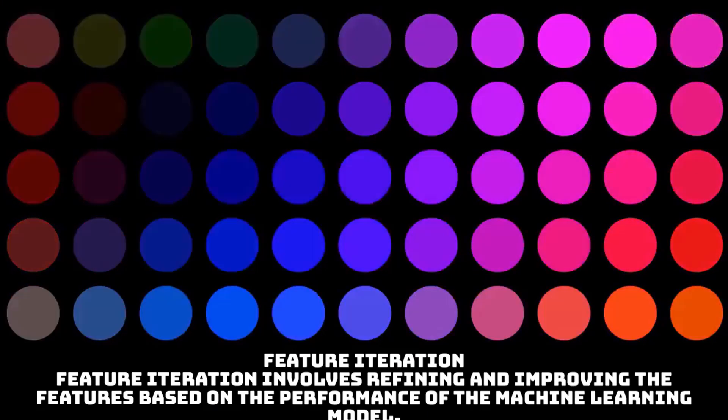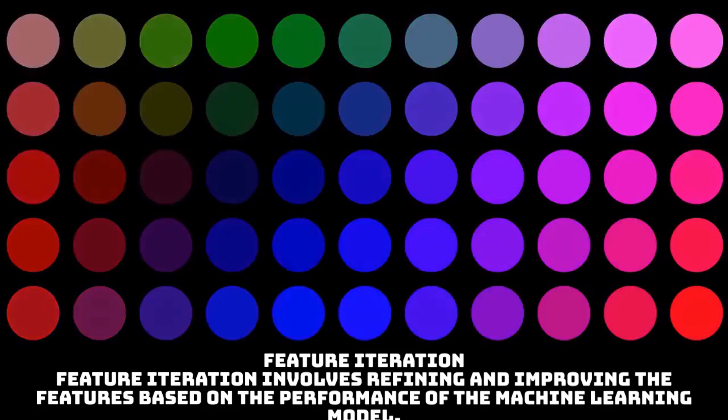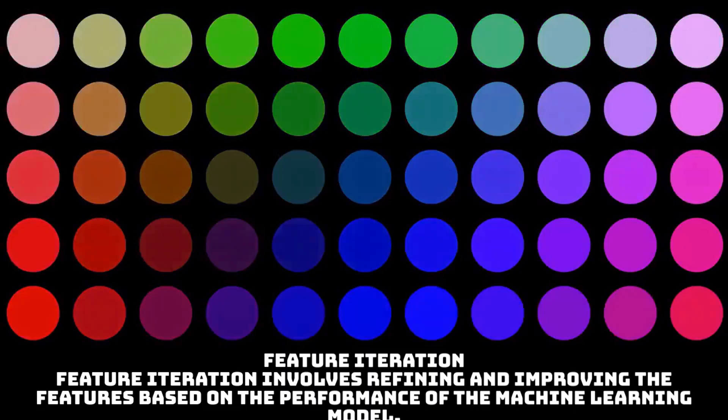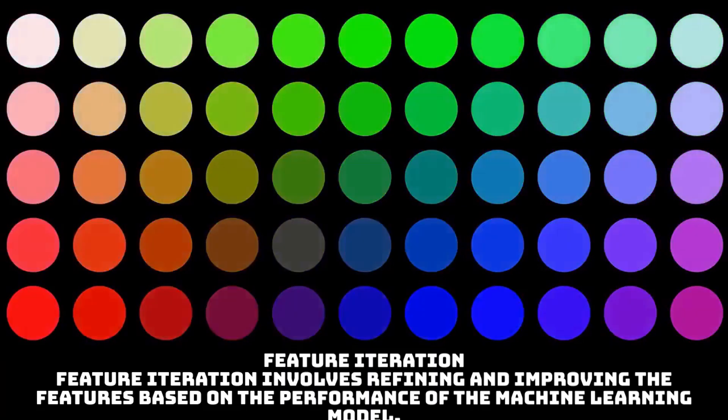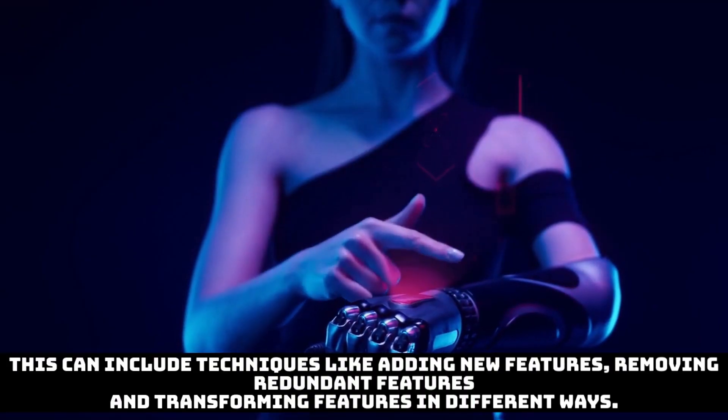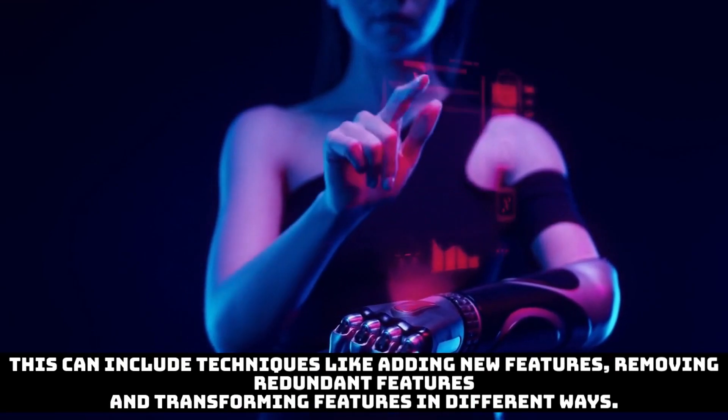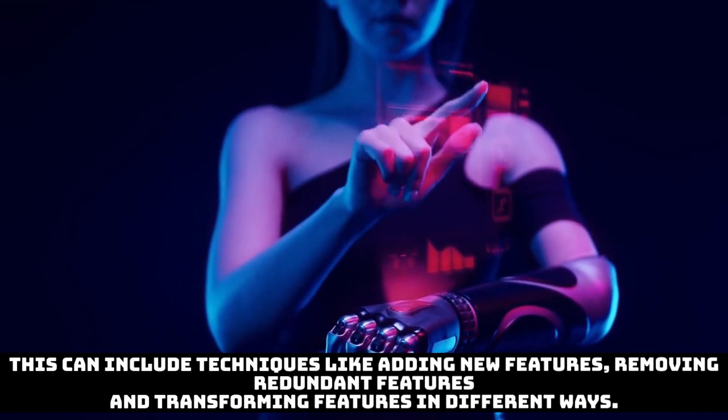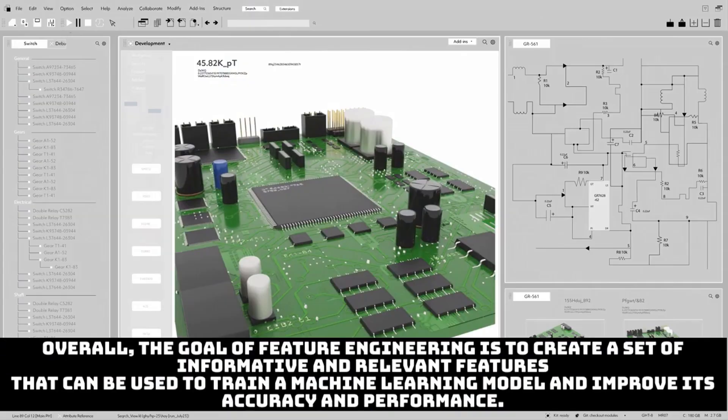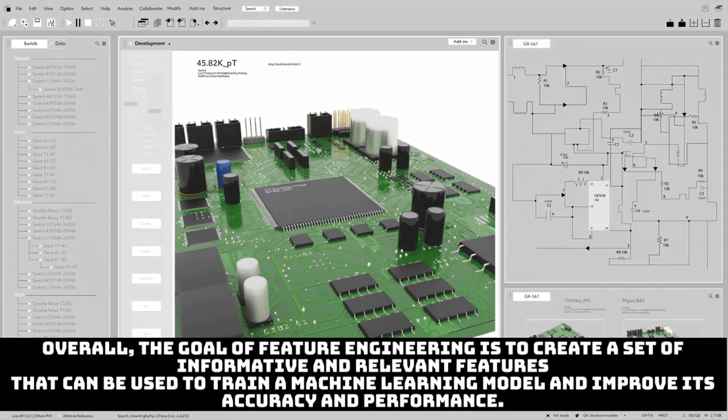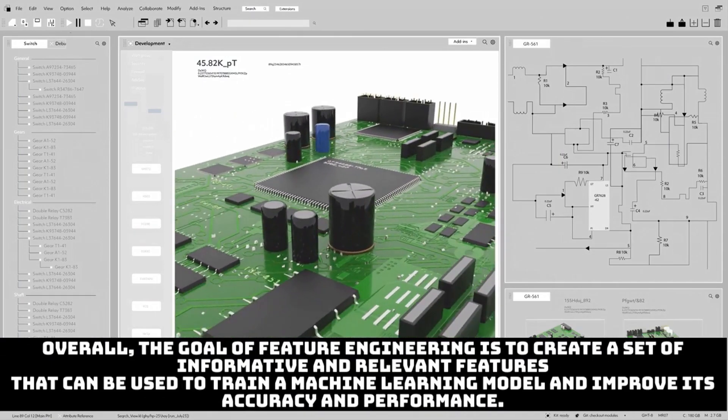Talking about the last one, which is feature iteration: feature iteration involves refining and improving the features based on the performance of the machine learning model. This can include techniques like adding new features, removing redundant features, and transforming features in different ways.